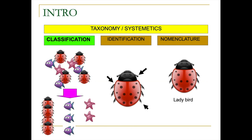This is the introduction to taxonomy or systematics. This knowledge covers three parts. The first one is classification — in this world we have many organisms, and classification is important to separate them into groups.